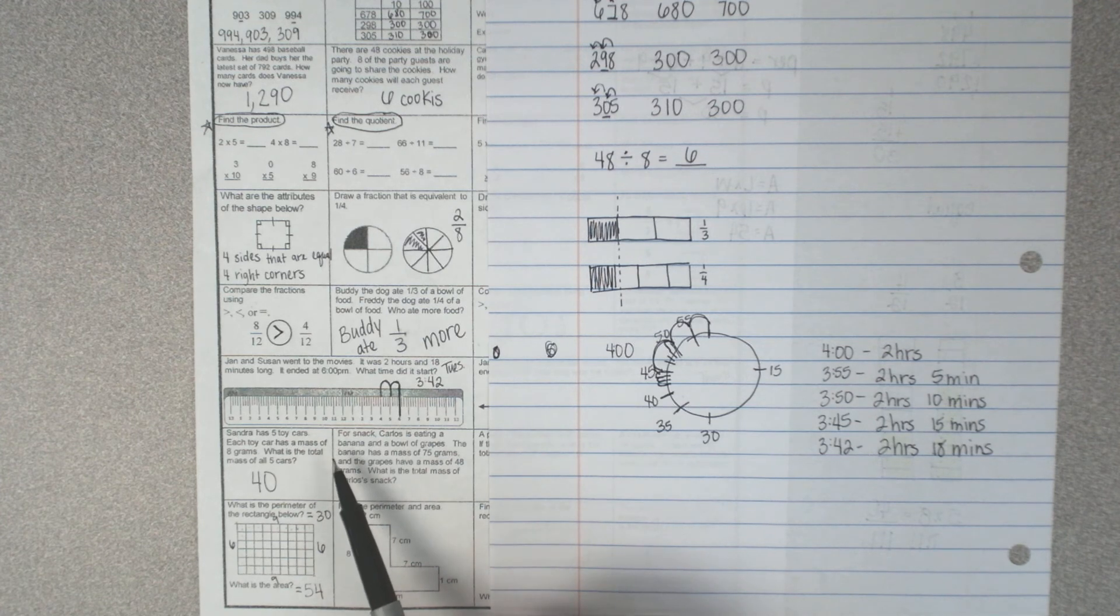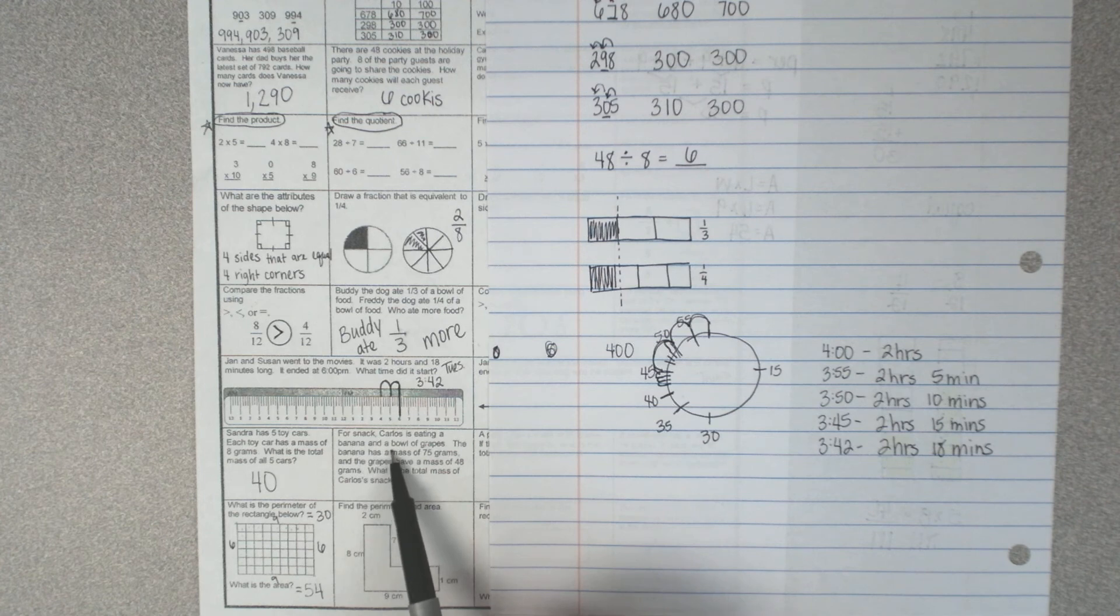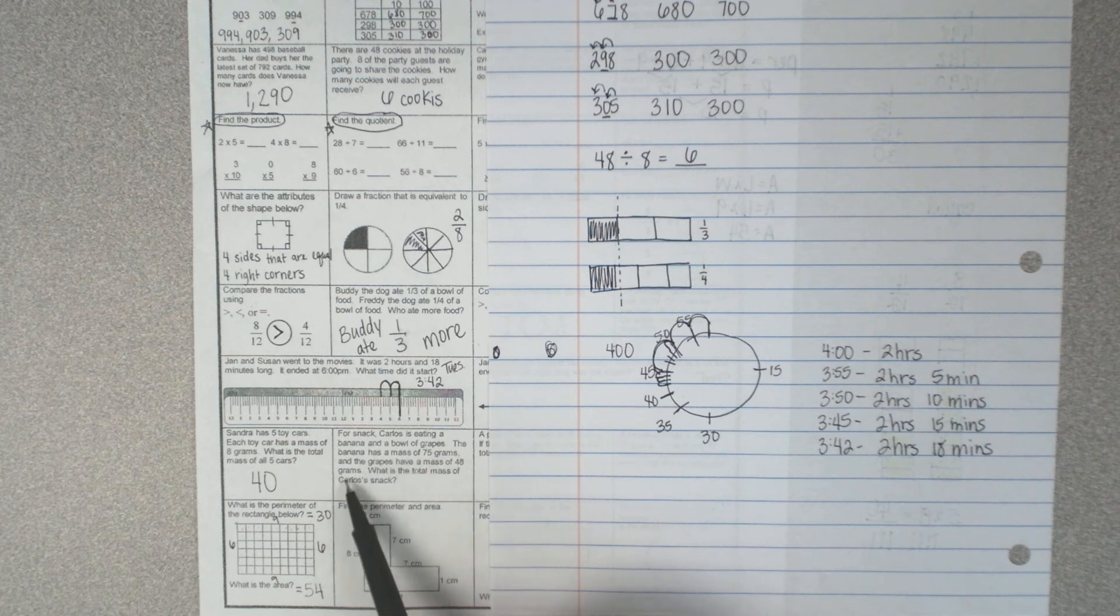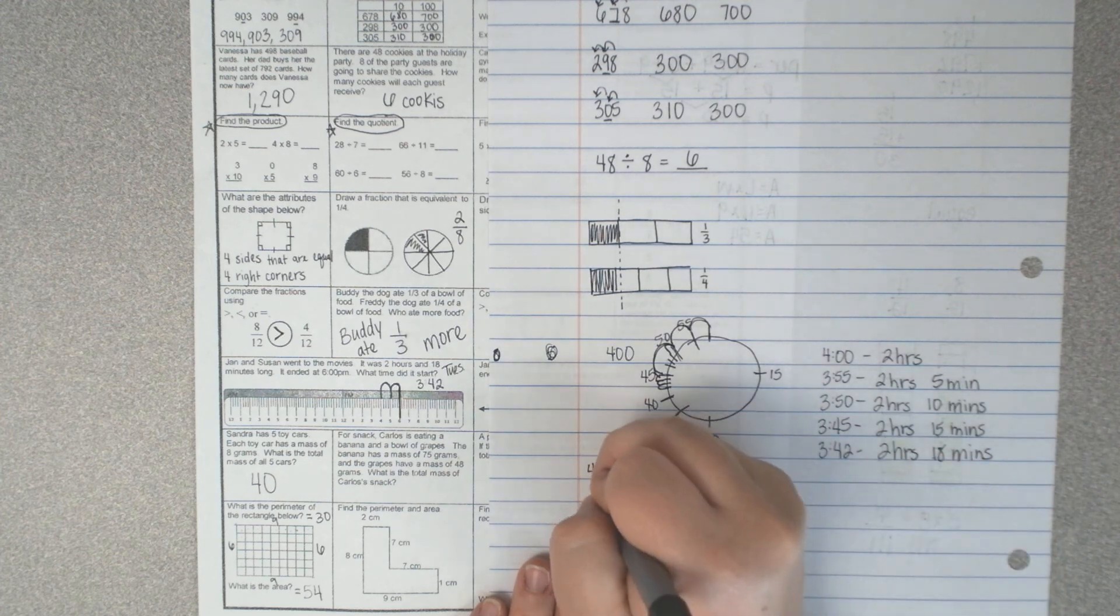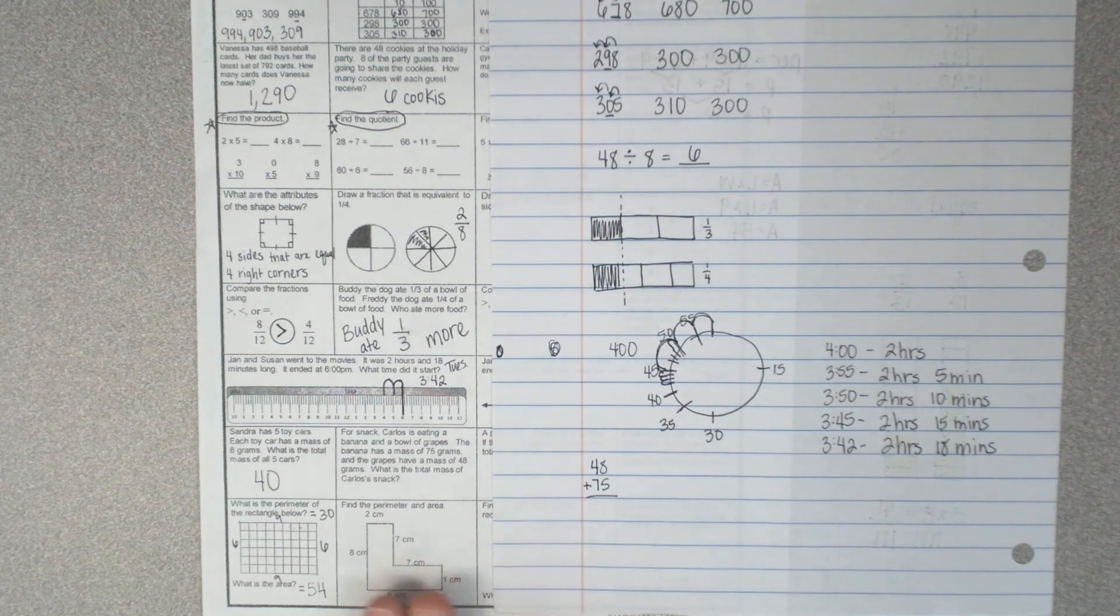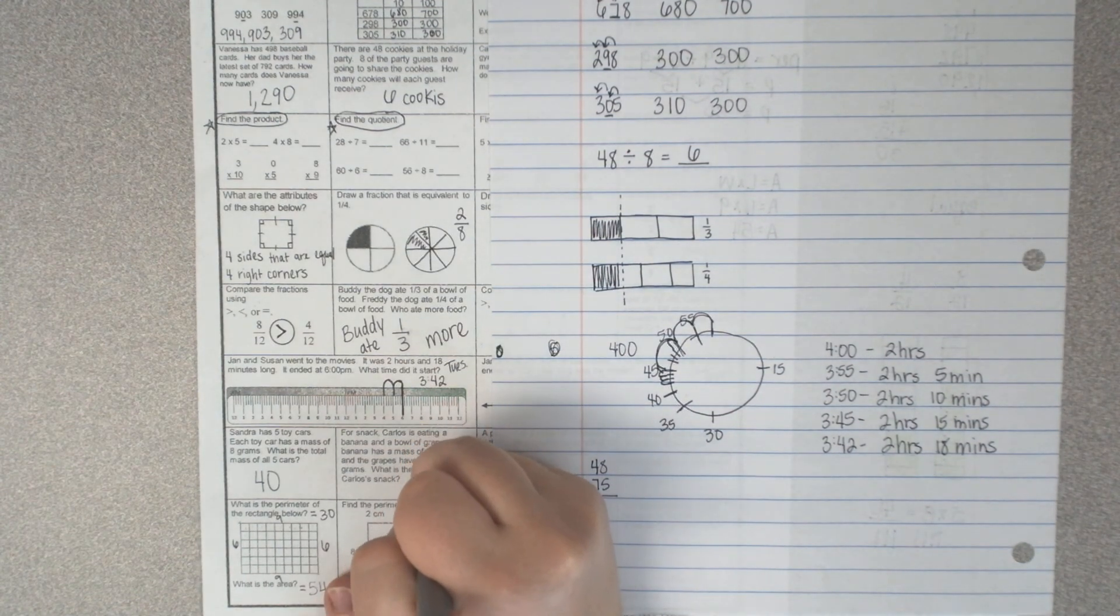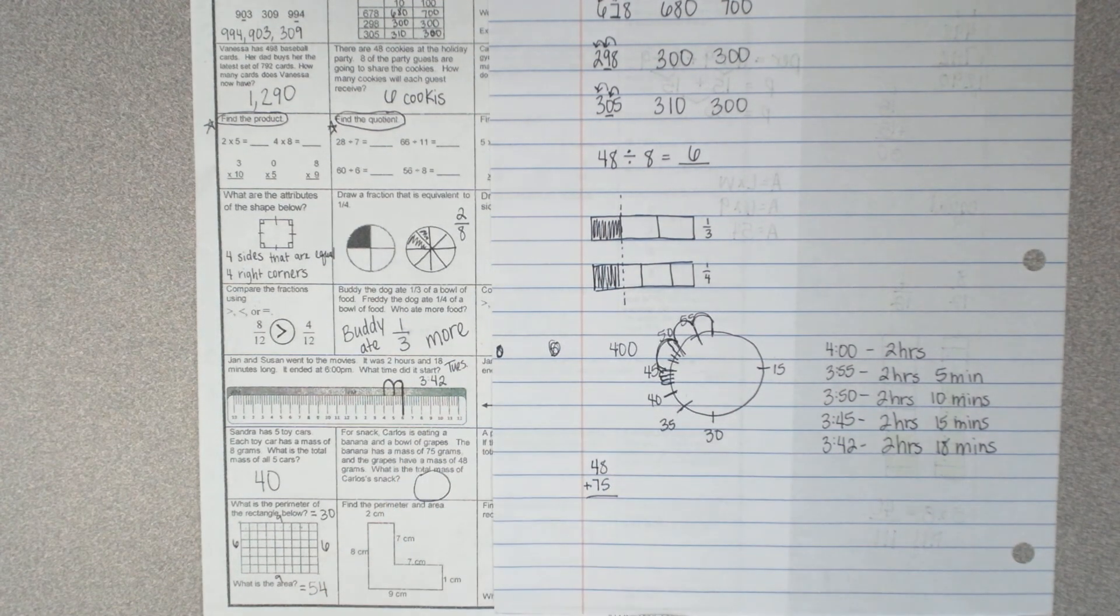Next one says for snack, Carlos is eating a banana and a bowl of grapes. The banana has a mass of 75 grams and the grapes have a mass of 48 grams. What is the total mass of Carlos' snack? Well, you just add it up. 48 plus 75. I want you to tell me what his total mass was here. I think you can tell me.